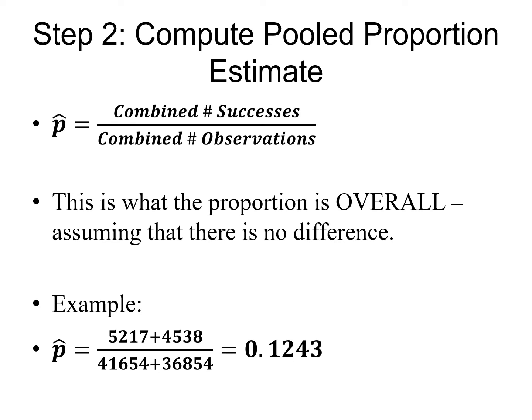So the next step then is to compute our pooled proportion estimate. So what this does, it takes our two different samples, so in this case we have for add A and add B, and we just figure, well, if they're basically the same, then we can just throw them all together. So we throw together all of the successes, throw together all of the observations, and calculate the proportion for that. So it's really just looking at what is the overall proportion of success that we're seeing, assuming that there really is no difference between these two adds. So in our example here, the proportion would be we add together all of the successes. That's 5,217 plus 4,538, that would be in our numerator. And then we divide that by our denominator being all of the views added together. So the 41,654 for add A and the 36,854 for add B. And it comes out to be 0.1243, that's 12.43% or so once you round a little bit.